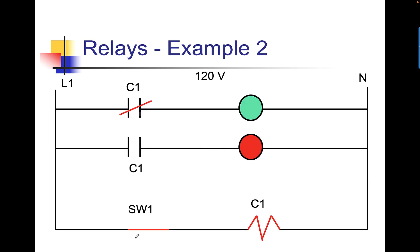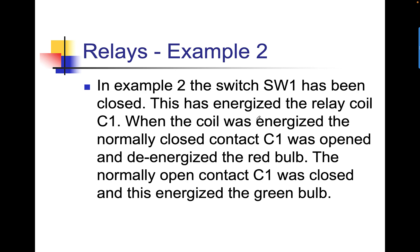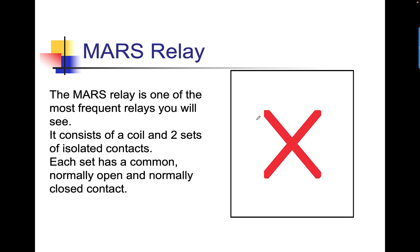Now, we close the switch. We now have closed the switch. C1 coil is now energized. What it did was close the normally open, the top one now has a slash, so it's closed, and it opened the bottom one. Our red bulb is de-energized, and our green bulb is energized. Switch 1 has been closed. This has energized the relay coil C1. When the coil was energized, the normally closed contact C1 was opened, and it de-energized the red bulb. The normally open contact C1 is closed, and this energized the green bulb.